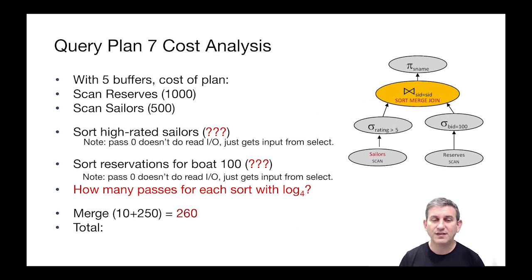Let's assume we have five buffers. The cost of the plan then, we're going to scan reserves, that's a thousand. We're going to scan sailors, that's 500. And then for each of those, we're going to sort, and then finally we're going to merge.